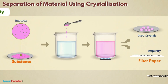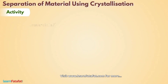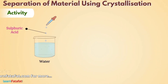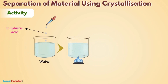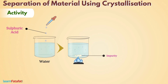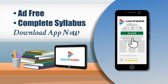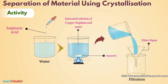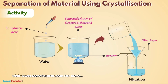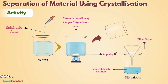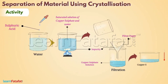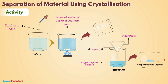Let's understand the steps of separation with this activity. Take some water in a beaker and add a few drops of sulphuric acid to it. Boil the water and when it starts boiling, go on dissolving small quantities of copper sulphate in it. For proper dissolution, stir the water continuously. At some point, you will get a saturated solution of copper sulphate and water. Filter the solution with a filter paper — the impurity remains on the filter paper and gets separated from the copper sulphate solution. Now keep the filtered solution undisturbed for a day. As the solution cools down, crystals of copper sulphate get formed, free from impurities.